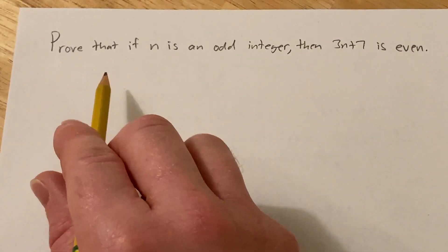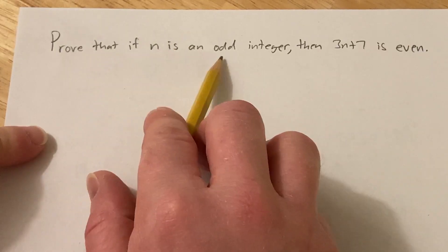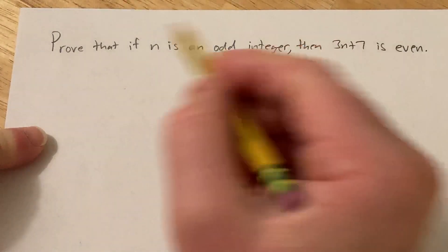Hi, in this video we're going to do a proof. The question is to prove that if n is an odd integer, then 3n plus 7 is even.